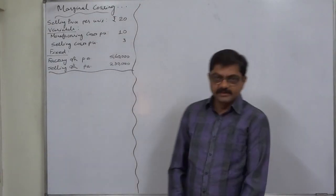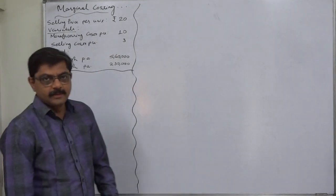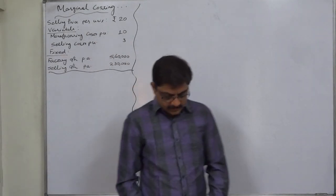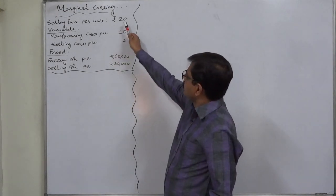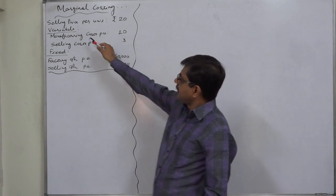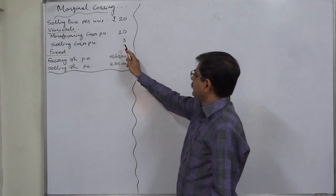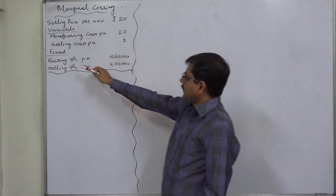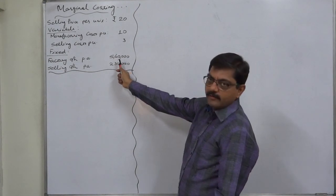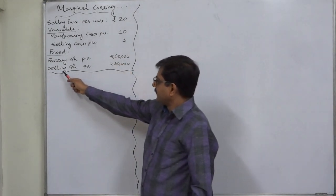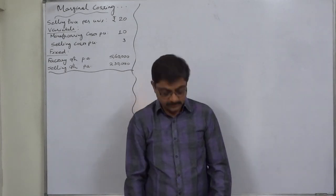Hello and welcome friends. Let us take a new problem in marginal costing. The data available is: selling price per unit ₹20, variable manufacturing cost per unit ₹10, and variable selling cost per unit ₹3. Fixed factory overheads per annum ₹5,40,000 and fixed selling overheads per annum ₹2,30,000.